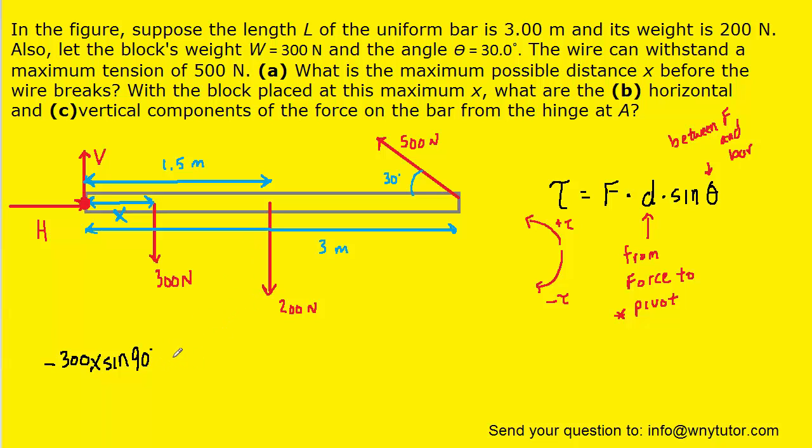The 200 Newton force also is producing a clockwise torque so it's negative. We take its force, we multiply by the distance to the pivot and then the sine of 90. For the tension, that's tending to cause the bar to rotate in a counterclockwise fashion so that will be positive torque. We take that force, we multiply by the distance to the pivot and then the sine of 30 degrees.